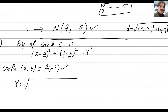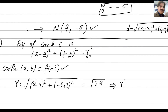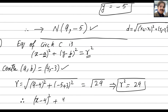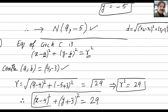Taking the square root of (9 minus 4) squared plus (negative 5 plus 3) squared: that is 5 squared plus (negative 2) squared, which equals 25 plus 4 equals 29. So r squared equals 29. Therefore the equation of the circle is (x minus 4) squared plus (y plus 3) squared equals 29. This is the required answer for the second part, and question number 7 is complete.